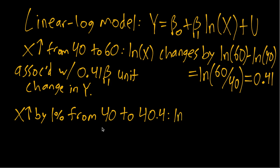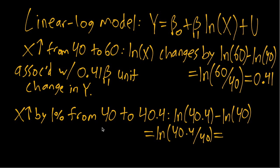We'll have log of 40.4 minus log of 40. Again, using the log function property, take the ratio. Because this is a 1% increase, this is the log of 1.01, which is not exactly 0.01 but it is extremely close to it.